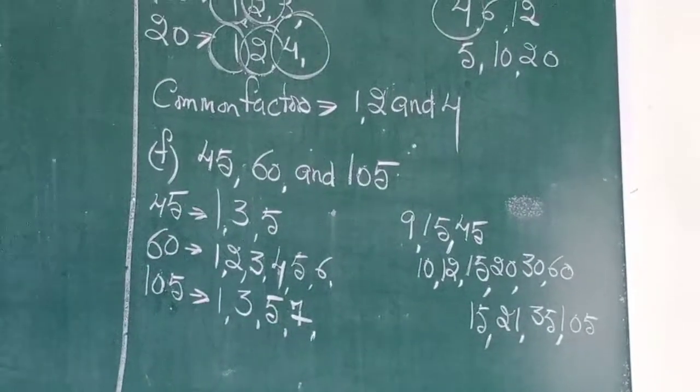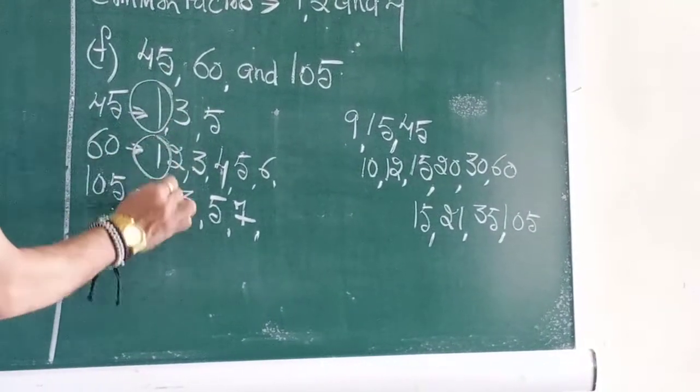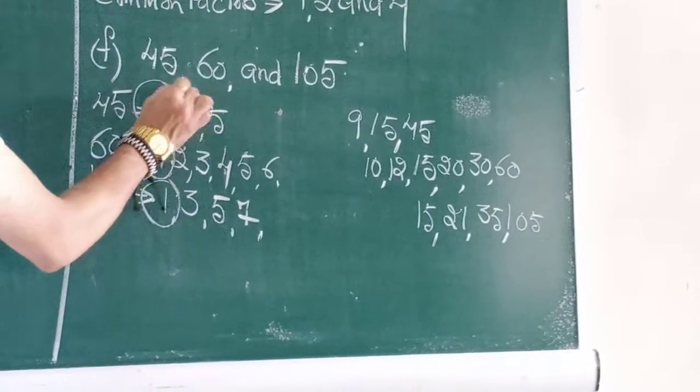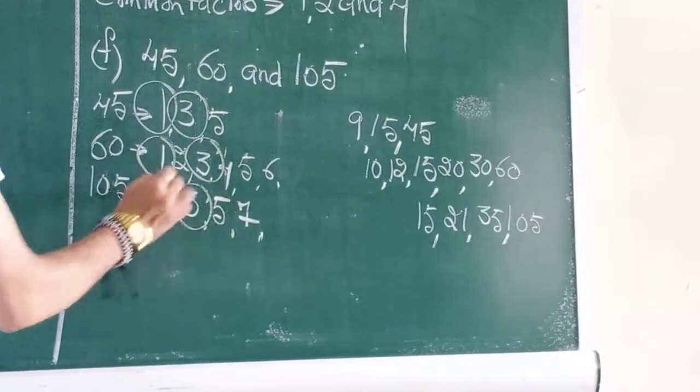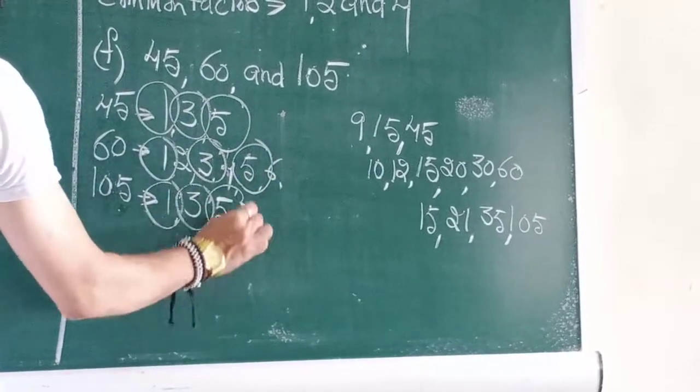Now, I circle my common factors. 1, 1, 1. 3, 3, 3. 5, 5, 5, 5.